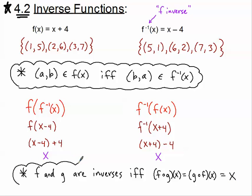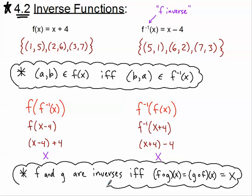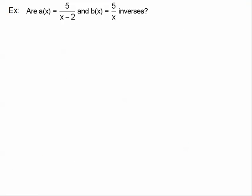That's how we prove if two things are inverses: find the composition each way — f(g) and g(f) — and if both compositions simplify down to x, then we know we are dealing with two inverse functions. We have two problems to do for each example.